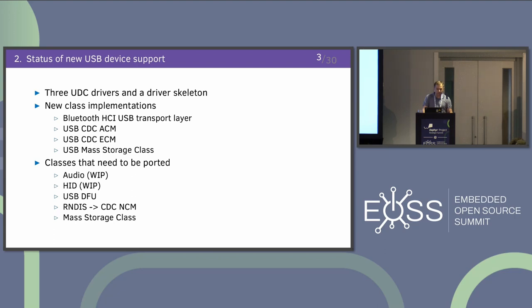The current state for the new device support is that we have three UDC drivers: one for NRF USB-D controller, one for the Kinetis controller used on K64 or K22 devices. We have three class implementations: Bluetooth host control interface USB transport layer, CDC-ACM, CDC-ECM, and USB mass storage class. The mass storage class was completely written by Tomas and is in very good state compared to the previous implementation.